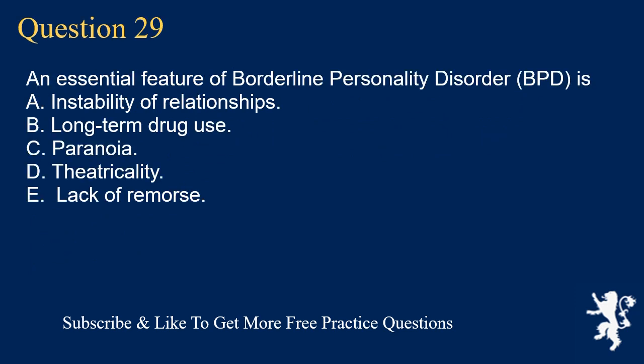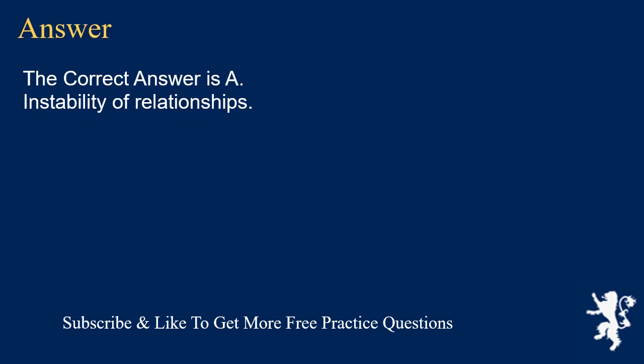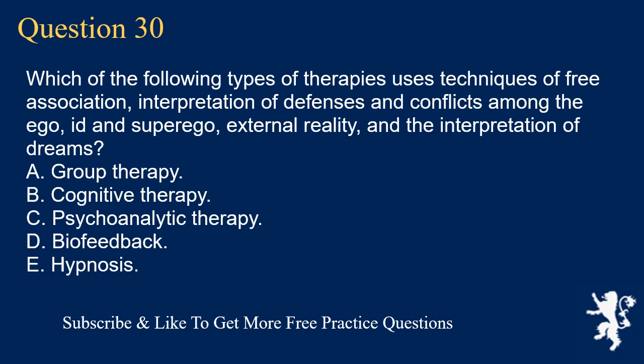Question 29. An essential feature of Borderline Personality Disorder (BPD) is: A. Instability of Relationships. B. Long-Term Drug Use. C. Paranoia. D. Theatricality. E. Lack of Remorse. The correct answer is A. Instability of Relationships.